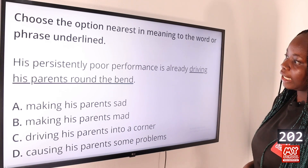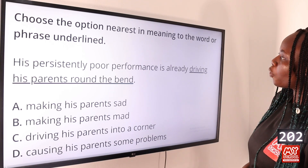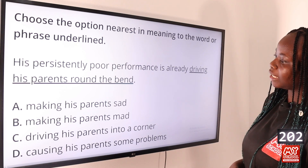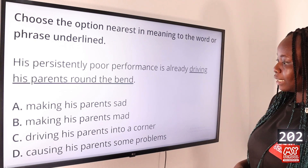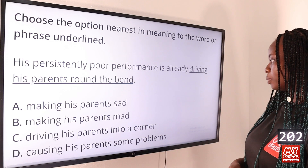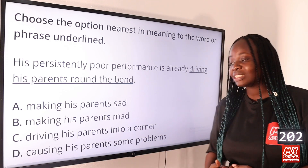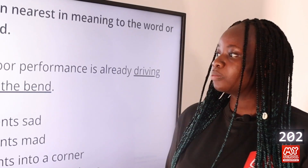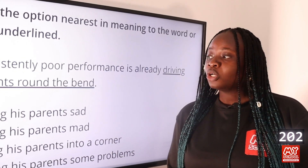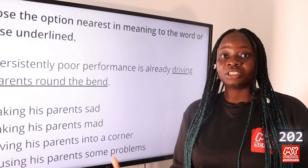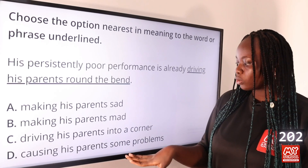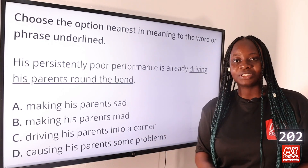Question 202: Choose the option nearest in meaning to the word or phrase underlined: 'His persistently poor performance is already driving his parents around the bend.' Option A: making his parents sad, B: making his parents mad, C: driving his parents into a corner, D: causing his parents some problems. The answer is option D. To drive someone around the bend means to cause a lot of problems for someone, making them feel dissatisfied with the situation.